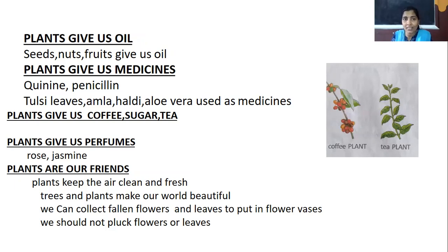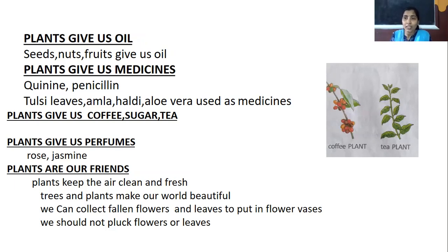Plants give us coffee, sugar, and tea. Coffee comes from the coffee plant. Sugar comes from sugar cane. Tea comes from the tea plant. Here you can see the pictures of the coffee plant and the tea plant.